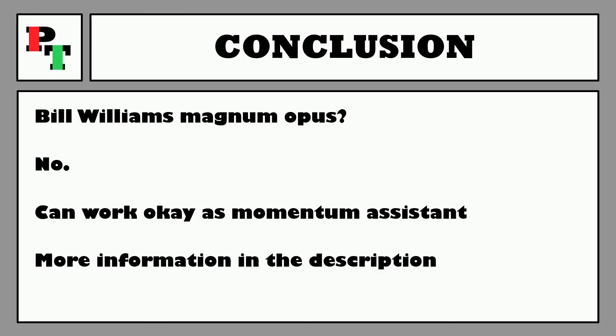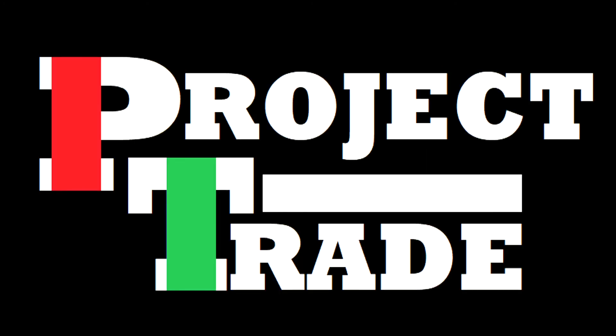If you are still looking for more information on the Accelerator Oscillator, you might find some of that in the description. And do not forget that every single chart we've shown you in this video has been completely pre-selected for the purpose of showing you how the indicator may or may not work. I have used the indicator in live forward testing strategies, and we'll also link those videos in the description. This is Project Trade.